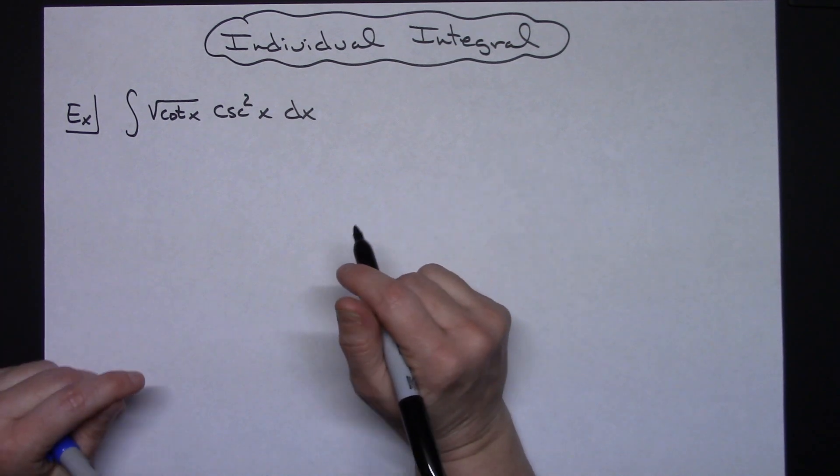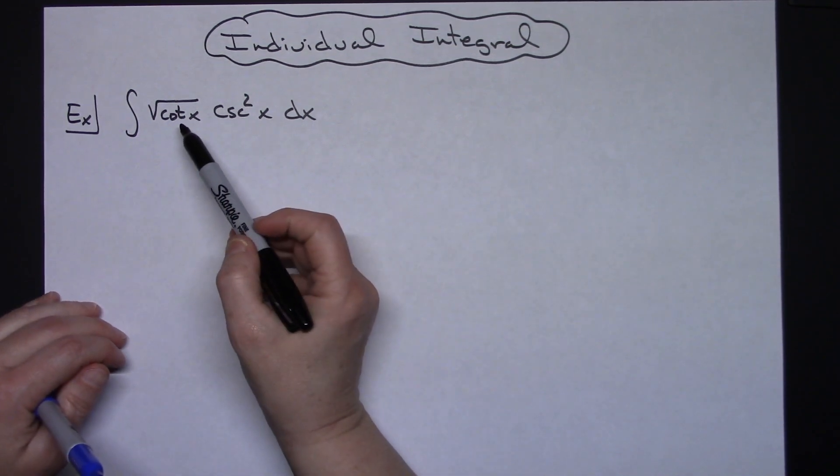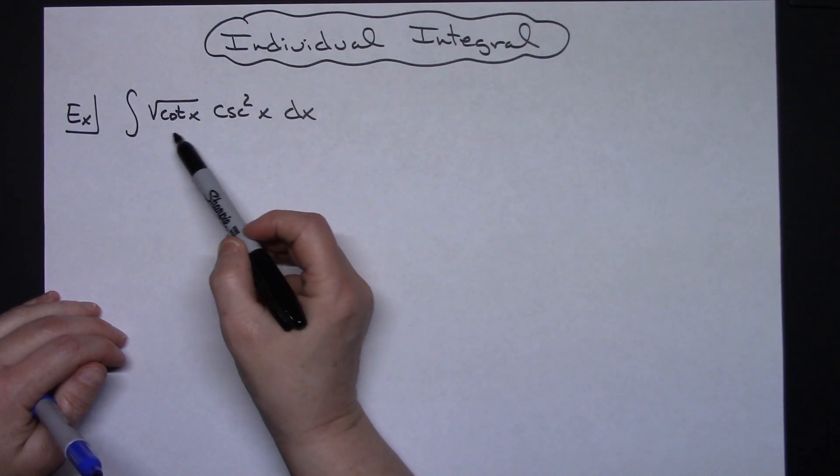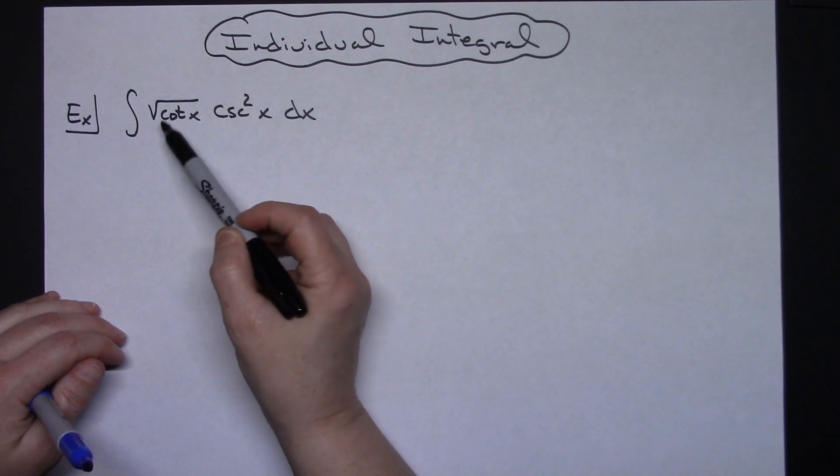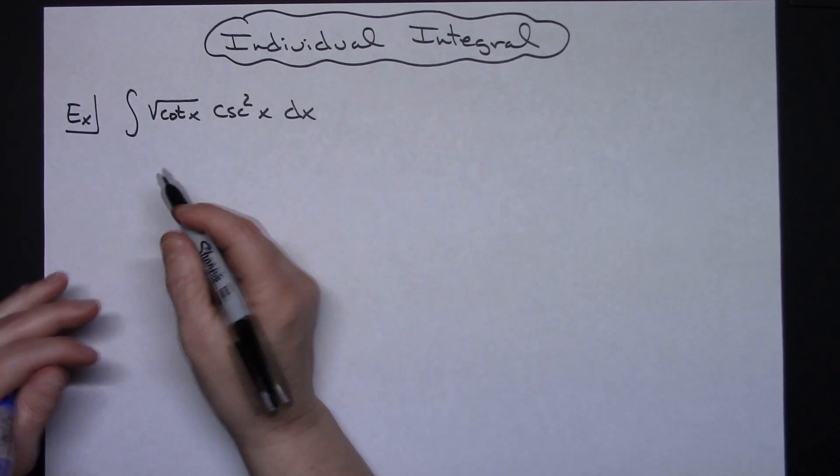Now this is going to be a straightforward integral, nothing fancy. It's going to be a regular u substitution because as you can see that if I let u be that cotangent of x, the derivative there would be a negative cosecant squared x. So things are going to fall out really nicely.